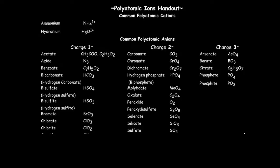You'll notice at the top, it says polyatomic ions handout, and then below that, we have a section that says common polyatomic cations. Remember, cations are the positive ones, and I've given you two. We've got ammonium, which is NH4 1+, and hydronium, which is H3O 1+.